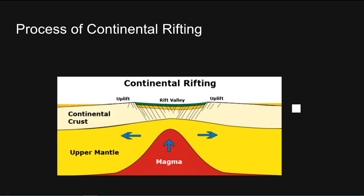Continental rifting explains rift valleys and seafloor spreading. Upwelling mantle material causes a crack or rift to develop. The continental lithosphere first arches upwards, thins, and cracks until new oceanic crust finds its way to the surface. A basin or geosyncline is formed, which is filled by sediment from neighbouring continents. Seafloor spreading may then proceed or be aborted. This process creates rift valleys and ocean ridges.